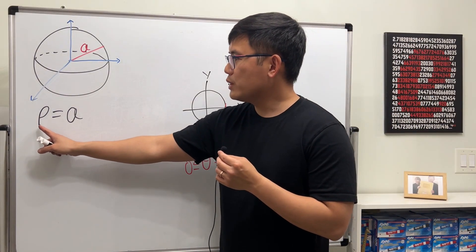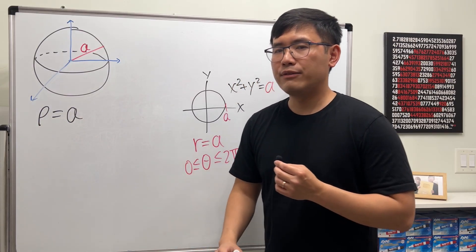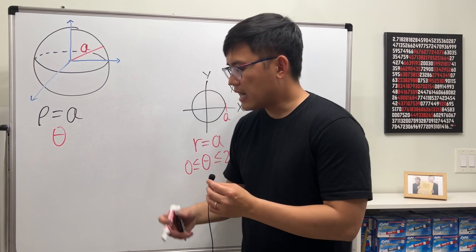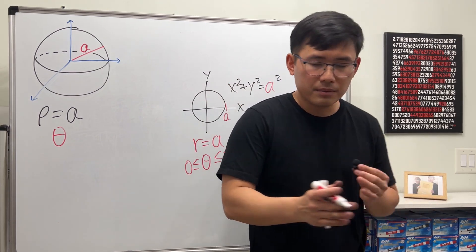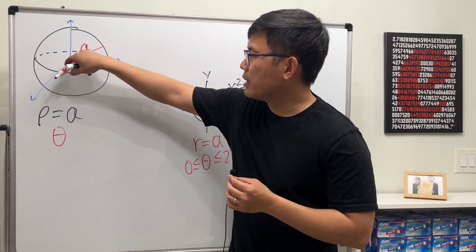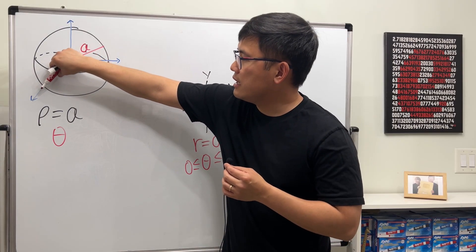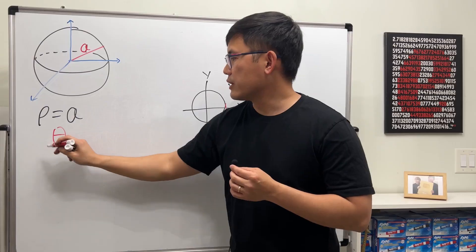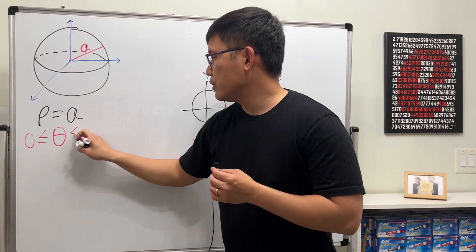So now, once we are done with the ρ, we will have to talk about the two rotations. The rotation θ, which is like our body rotation. It's on the xy plane, starting from the positive x-axis, and we rotate it one time. So that's 0 to 2π.